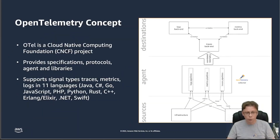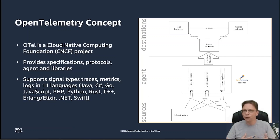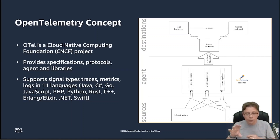Formally, OpenTelemetry — or OTel, as the cool kids say — is a Cloud Native Computing Foundation project, a CNCF project. You might know CNCF from big hits like Kubernetes, but also Prometheus and many others. OpenTelemetry provides a set of specifications, a protocol called OTLP, an agent that we call the collector, and libraries and SDKs. Think of it as: sources, agent, destination — OpenTelemetry sits in the middle.